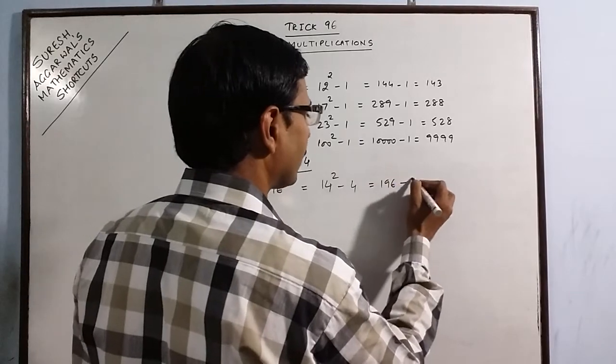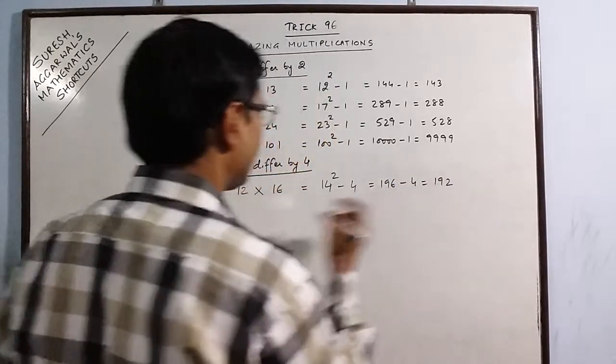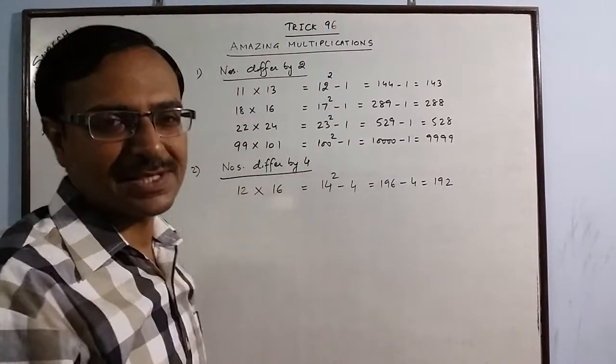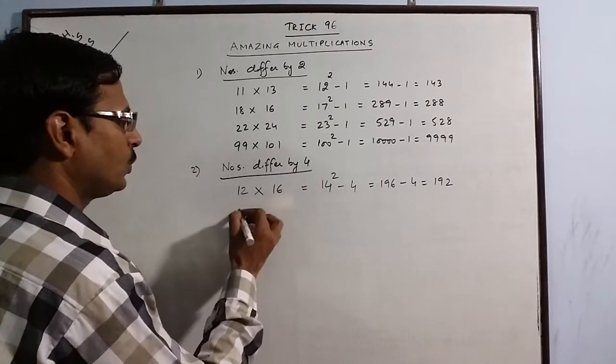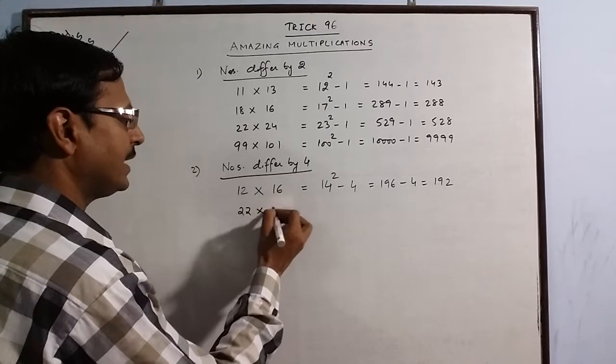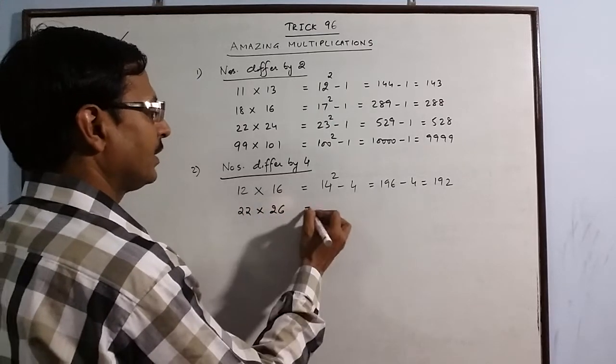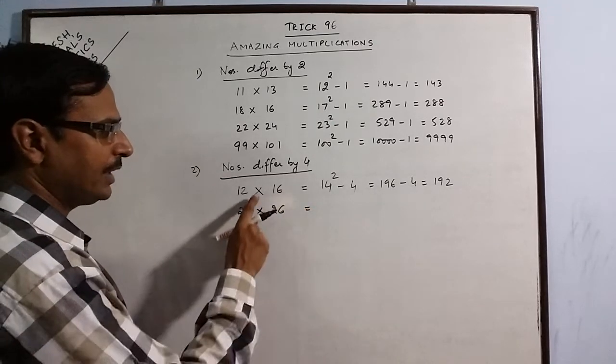So 196 minus 4, that is 192, is the product of 12 and 16. Likewise, suppose 22 into 26, difference by 4, so intermediate number is 24 minus 4.